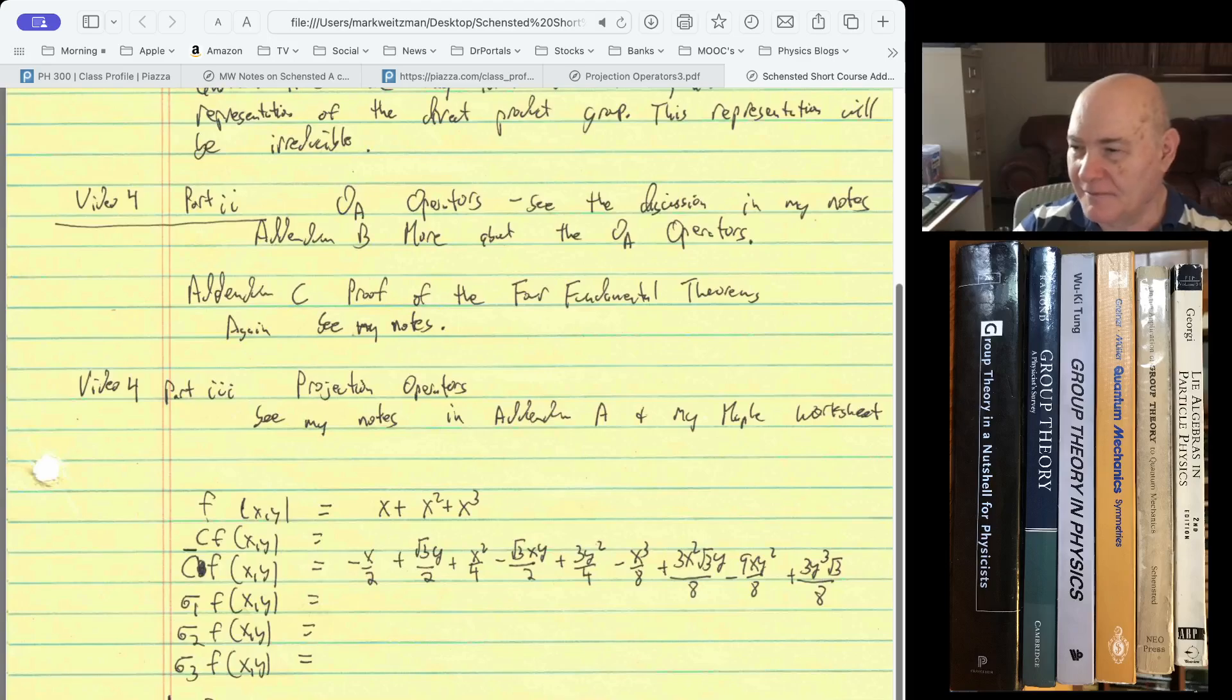And so the first column and the second form set of partner pairs that both transform under the two-dimensional irreducible representation. So this is a more complicated example.